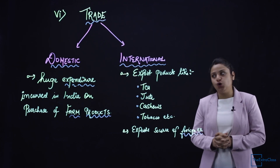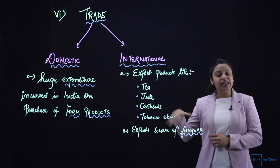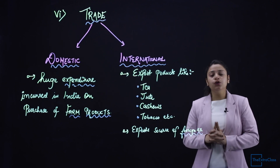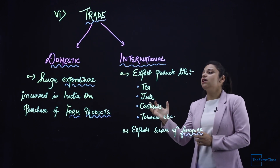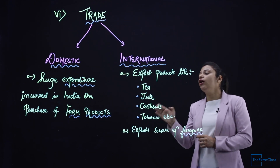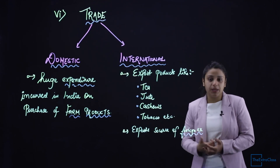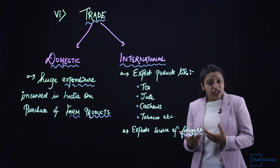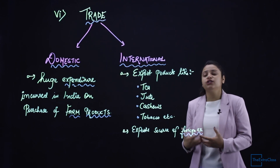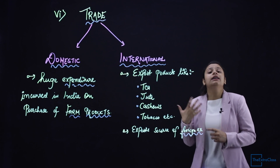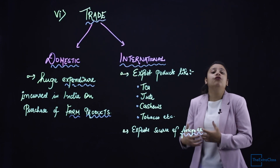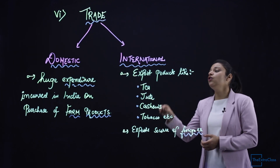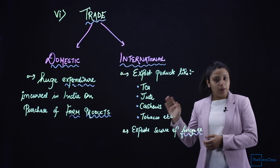The next point is trade — both domestic and international. Domestically, a huge expenditure is incurred in India on the purchase of farm products by billions of people. The people of India spend heavily on farm products, primarily food. This constitutes domestic trade driven by the agriculture sector.